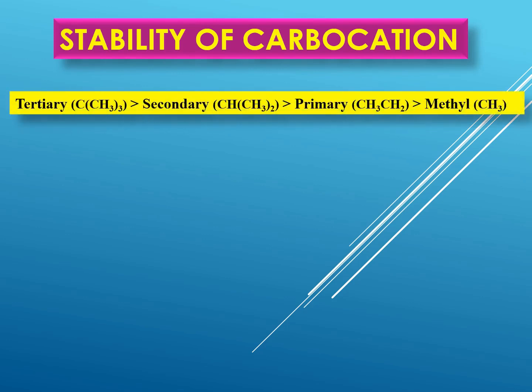Generally we say that the tertiary carbocations are more stable as compared to a secondary carbocation, which is more stable as compared to a primary carbocation, and which in turn is more stable than a methyl carbocation. We will see in a couple of minutes why we have this order.